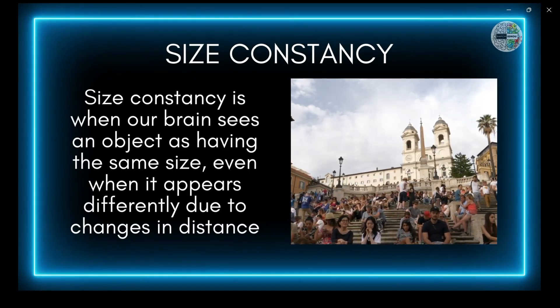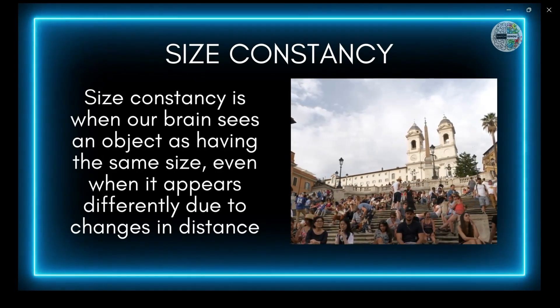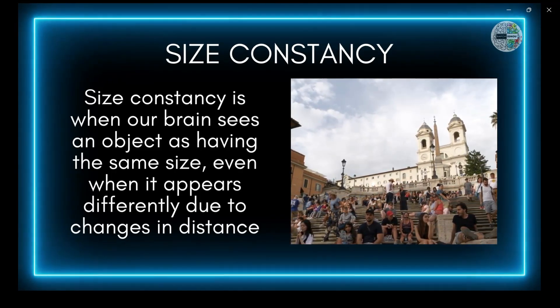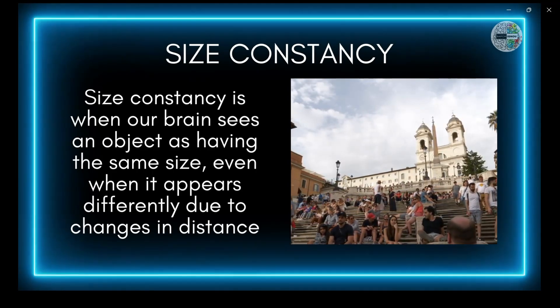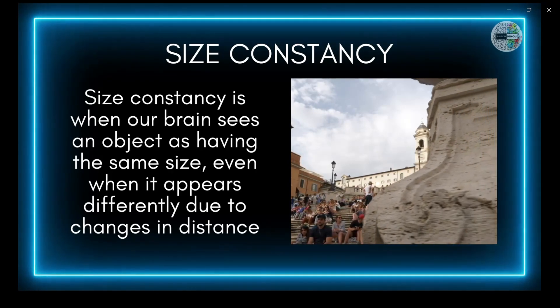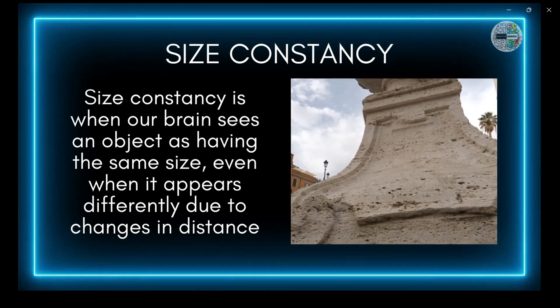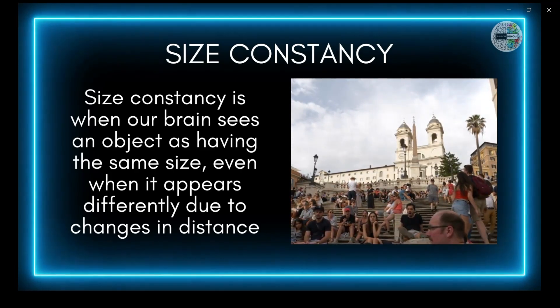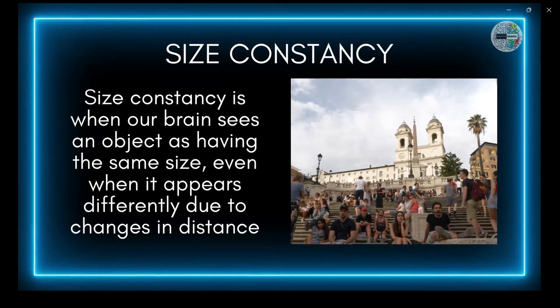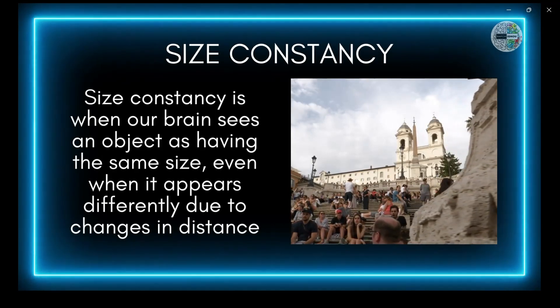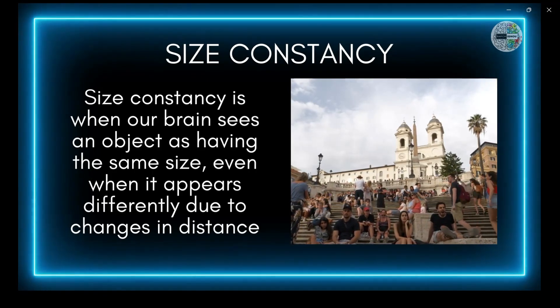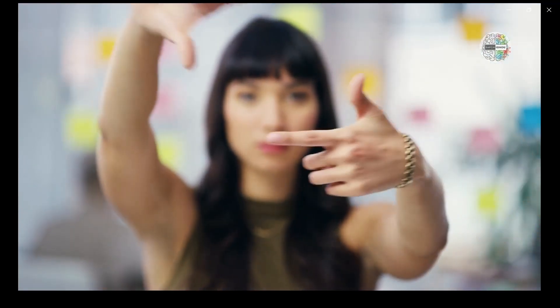Number three: size constancy. Size constancy is when our brain sees an object as having the same size even when it appears differently due to changes in distance. Imagine a group of people standing at a distance — when far away they look smaller, but as you get closer they look bigger. Even though they looked tiny from far away and normal-sized up close, your brain knows people don't magically shrink and grow, so it keeps telling you they're the same size.